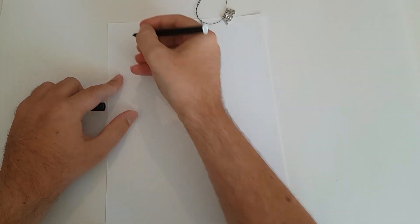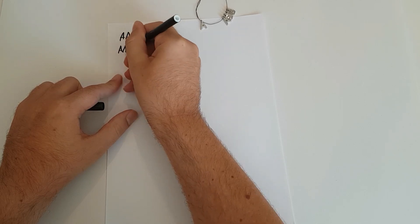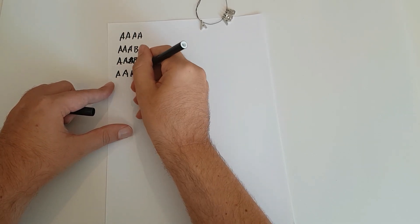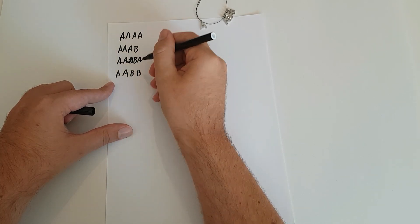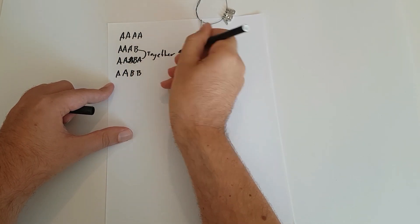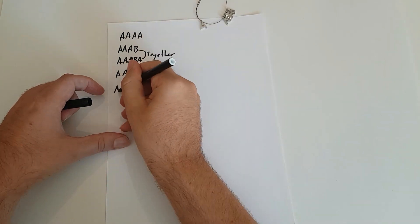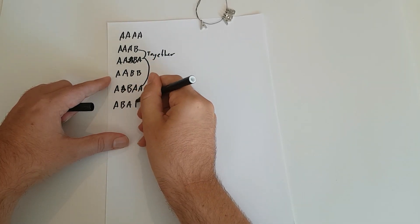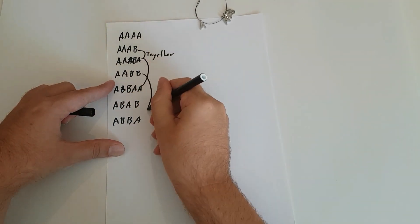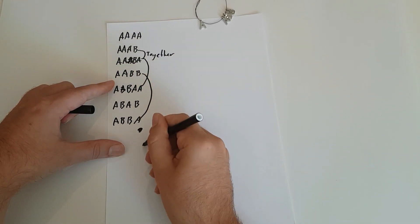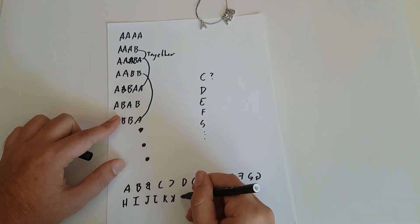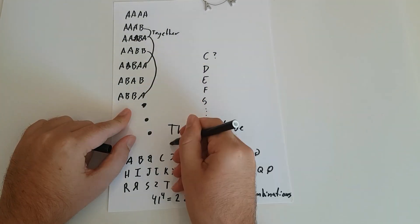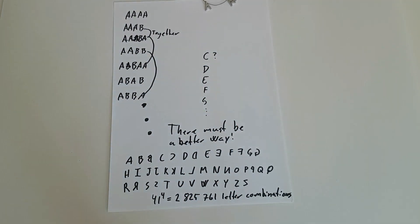I could certainly spell out the 81 letter combinations by hand and group them together and count the groups — wouldn't even take very long. But the whole point of the previous calculations of 3^4 and 81 divided by 8 was to avoid this, because it doesn't scale. What if I wanted to have the entire alphabet available? I'm not spelling out over two million different letter combinations by hand. So let's see if we can glean some patterns from these bracelets.